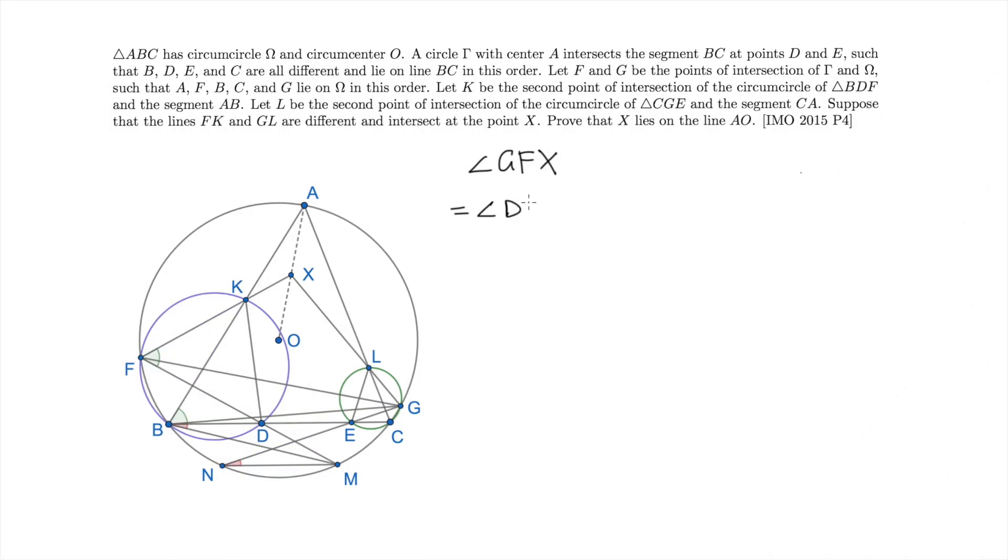Now I am going to evaluate the angle GFX, which is the difference between the angle DFX and the angle DFG. Then by concyclic property, the angle DFX is equal to the angle DBK. And the angle DFG is just the angle MFG. Now remarking that MFG equals to MBG, we finally get that this angle sees the difference between this green and red angle, which is CBA minus MBG.